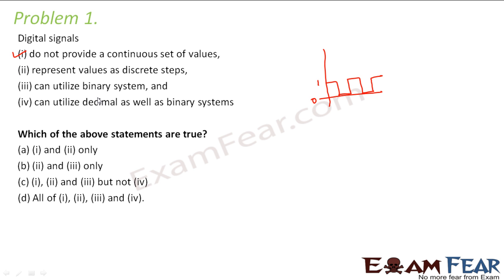Represent values at discrete steps — it doesn't talk about continuous values, it says discrete steps. Can utilize binary system — very true. Binary system is nothing but the system of zeros and ones. Can utilize decimal as well as binary systems — that's not quite true, because digital signals cannot utilize the decimal system; they can only utilize binary systems. So the correct option is C: statements 1, 2, and 3 but not 4.